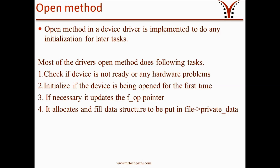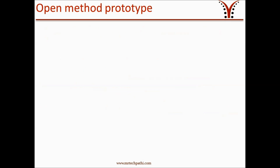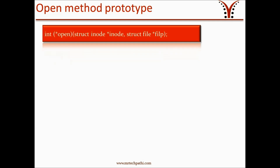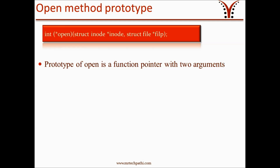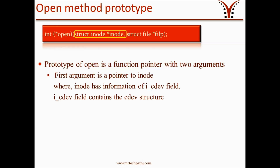Having seen what exactly the open method in a driver does, let's have a look at its prototype. The prototype of the open function is a function pointer with two arguments. The first argument is a pointer to inode, where inode has information of the inode's cdev field. The inode's cdev field contains the cdev structure which we discussed in our earlier tutorials. The second argument to this function is a file pointer.